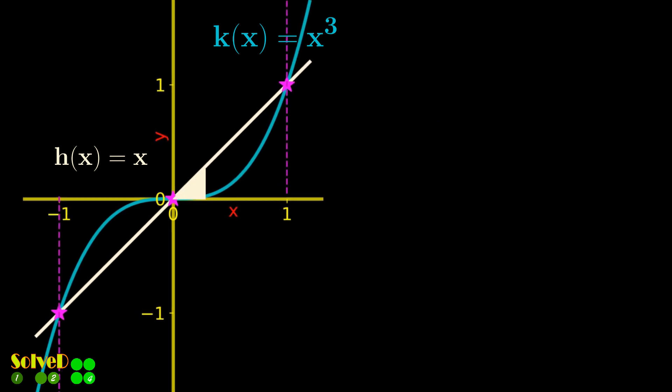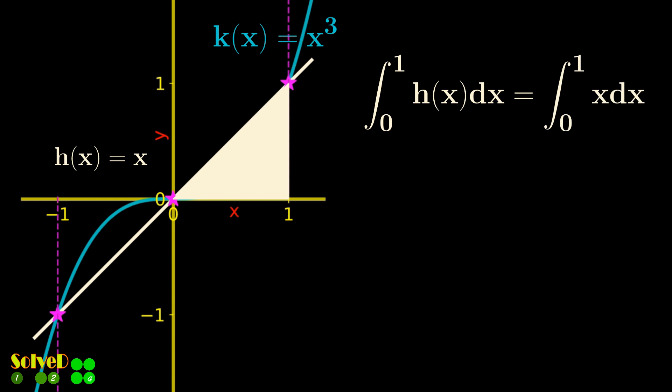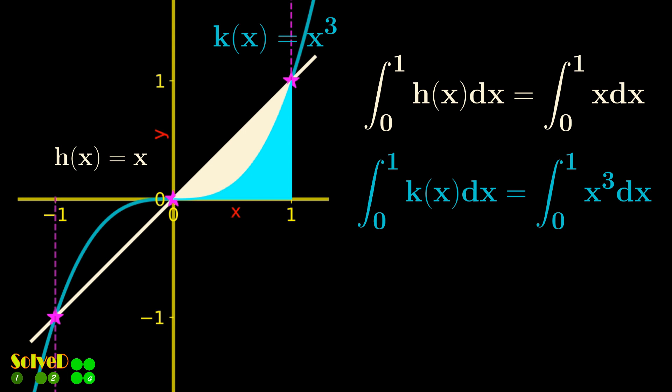Note area under the white line between points 0 and 1, given by this equation, and the area under the blue curve of x-cube.